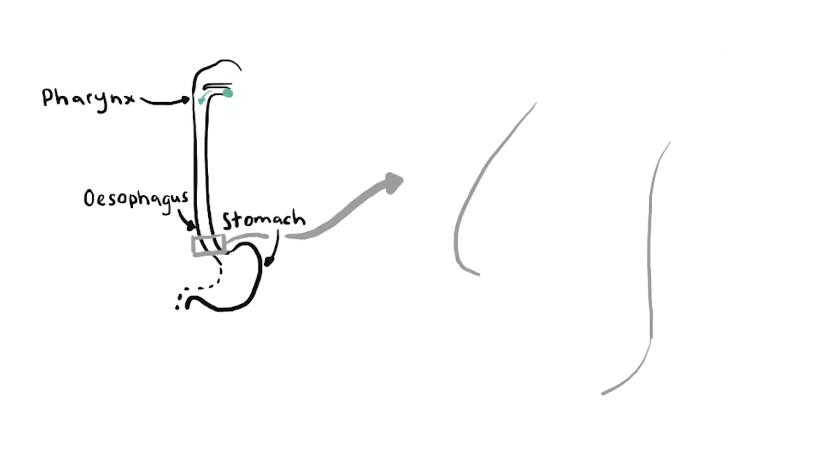The esophagus is a muscular tube that transports swallowed solids and liquids from the pharynx to the stomach. The esophagus has a similar structure to the rest of the gastrointestinal tract as it consists of an outer layer of connective tissue, the adventitia,